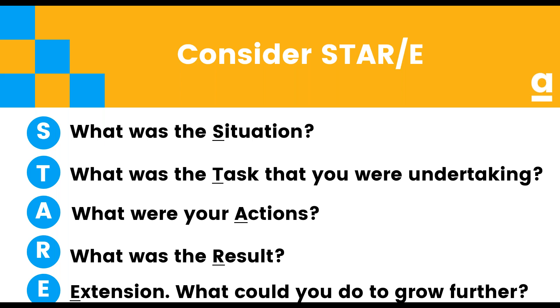That's where there's that optional E — Stair rather than Star — which stands for Extension. Based on that particular situation, what are some things that you want to do to grow or develop things further?